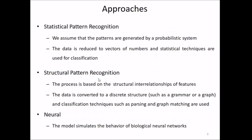There are various approaches. Statistical pattern recognition assumes that patterns are generated by a probabilistic system, and the data is reduced to vectors of numbers. Statistical techniques are then used for classification. In structural pattern recognition, the process is based on structural interrelationship of features, and the data is converted to discrete structures such as grammars or graphs. Classification techniques such as parsing and graph matching are used.